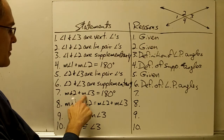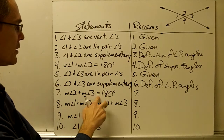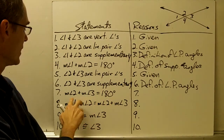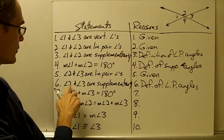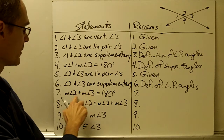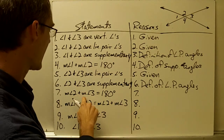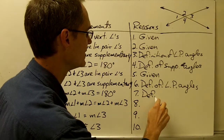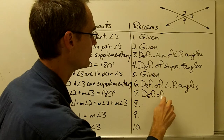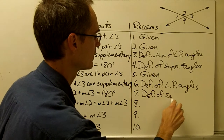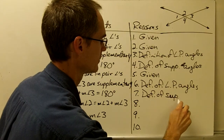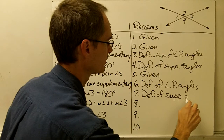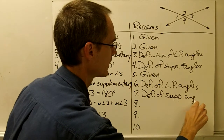Statement 7: the measure of angle 2 plus the measure of angle 3 equals 180 degrees. Since angle 2 and angle 3 are supplementary, they must add up to 180 degrees — that's the definition of supplementary angles.